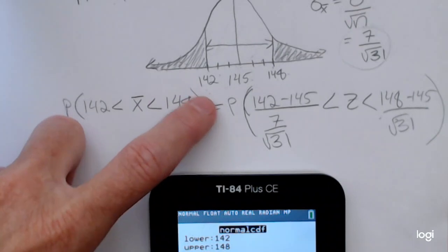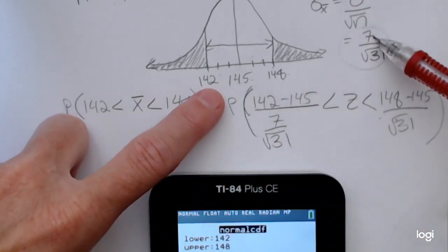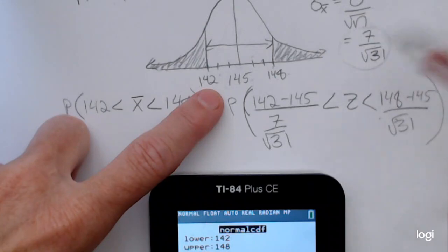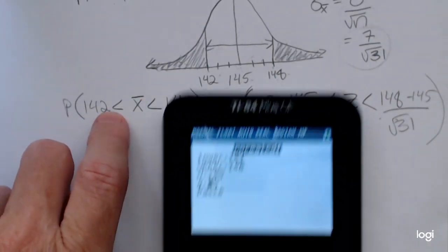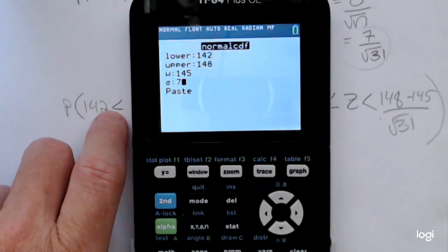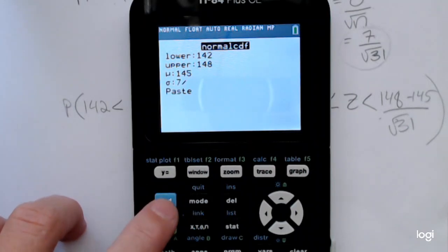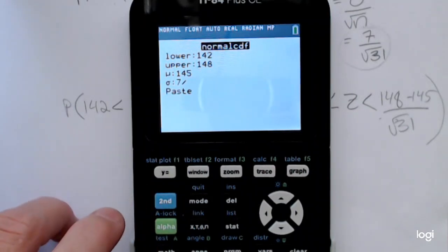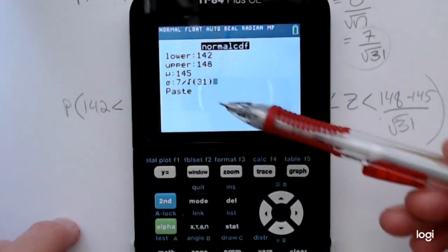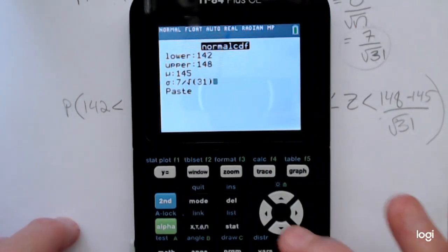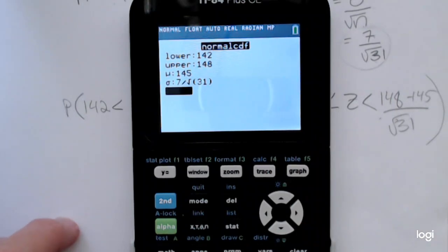Now, since I'm using the central limit theorem, I'm not going to put in 7 for the standard deviation. I'm going to put 7 over the square root of 31, that standard error of the mean. And I didn't have to find that first and round. I could put in the standard error of the mean in a fraction form right here. So that ensures that my answer is as accurate as possible.